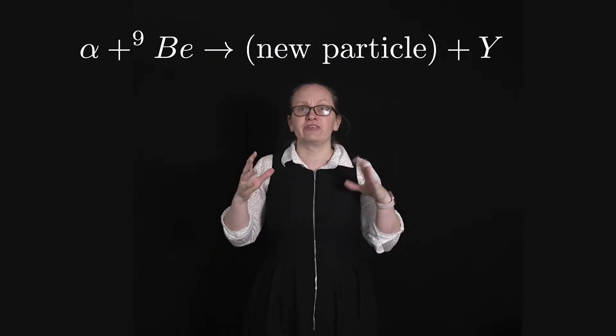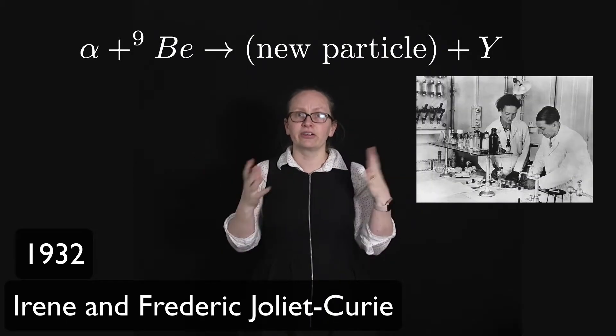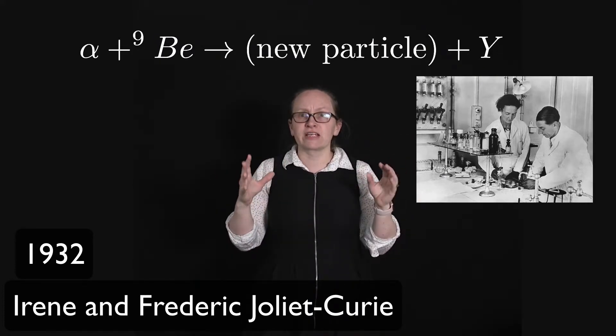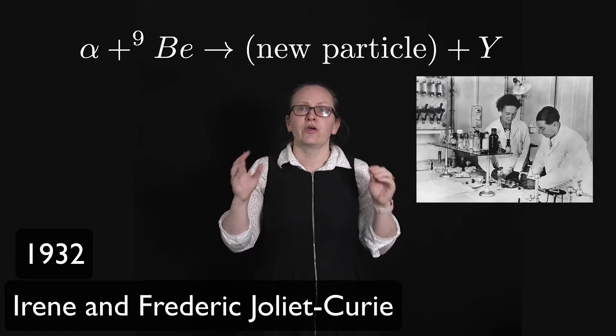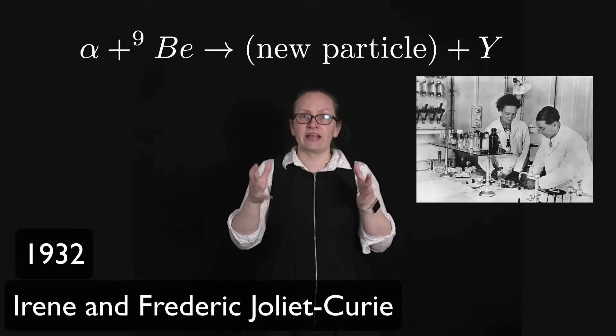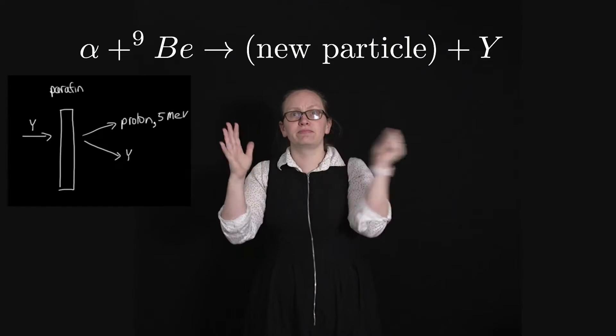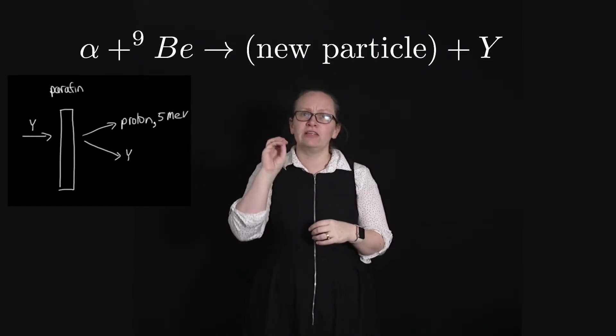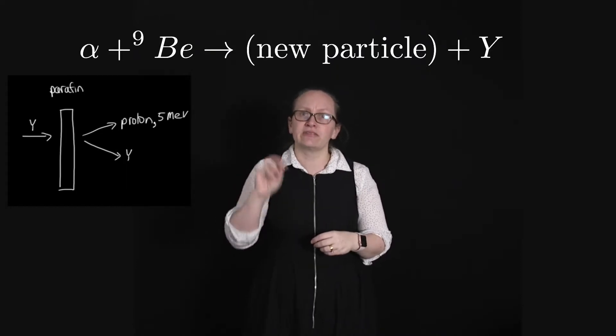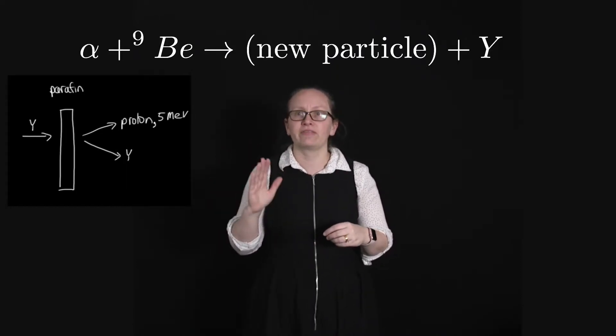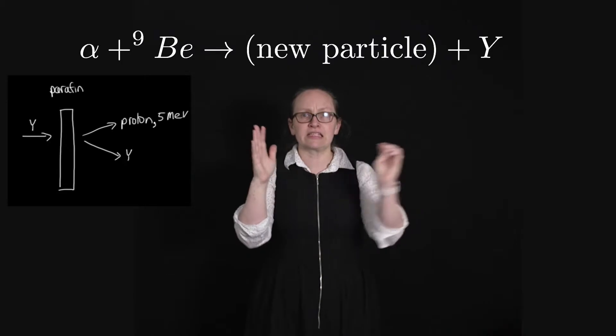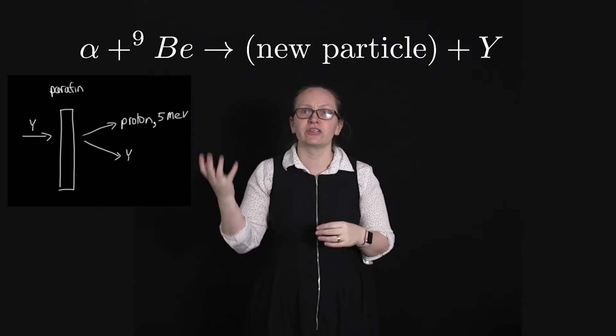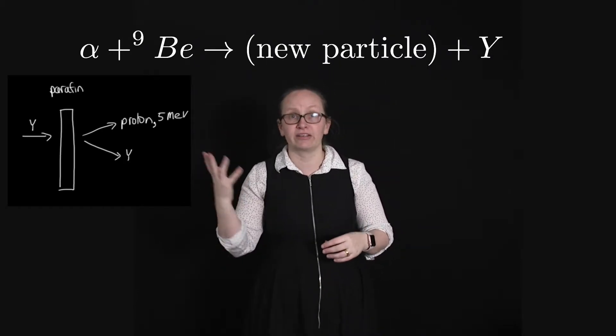Irene and Frederick Juliet Currie, so Irene Currie is Marie Currie's daughter, conducted some further experiments in 1932, where they took this radiation, this Y, and they slammed it into paraffin wax. Paraffin wax holds very loosely onto protons, so it's quite easy to release protons from paraffin wax. They found that when they smashed this radiation into the paraffin wax, they were producing protons with energies of five mega electron volts.